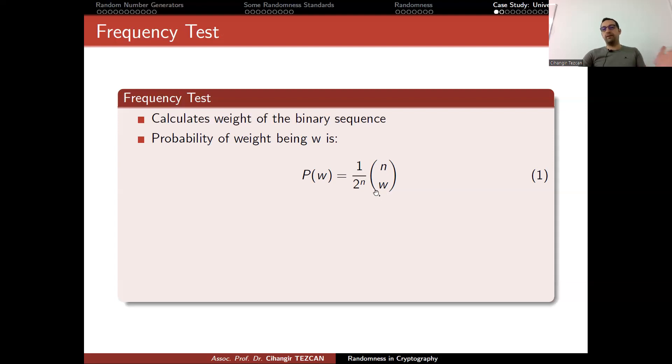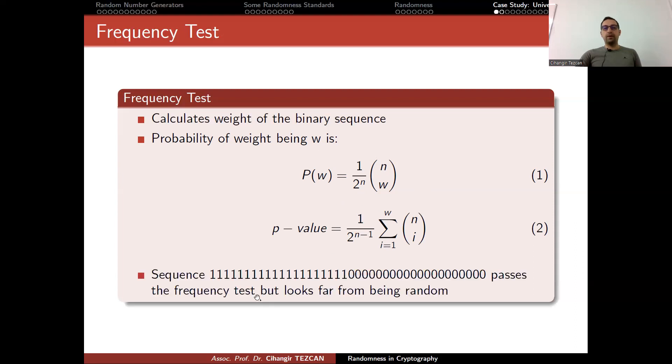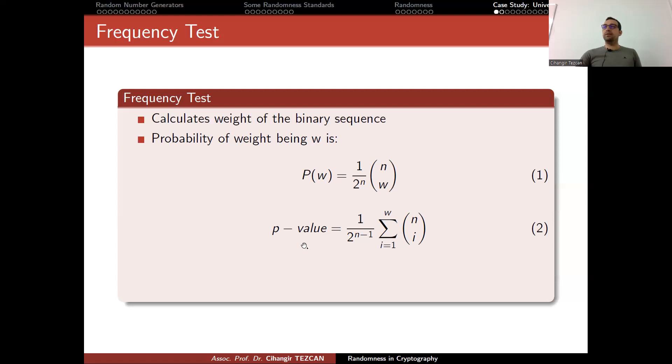The probability of weight being W is as follows: you have M bits, W of them should be 1. Being 1 has probability 1 over 2, so since we have M bits, multiplying all of these probabilities gives you 1 over 2 to the n. Once you calculate this p-value, you check if it is smaller or larger than a value.